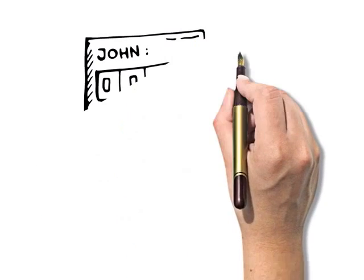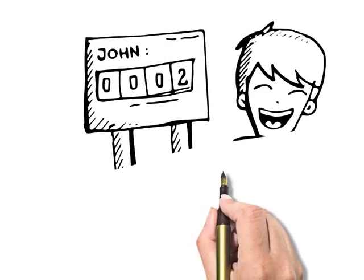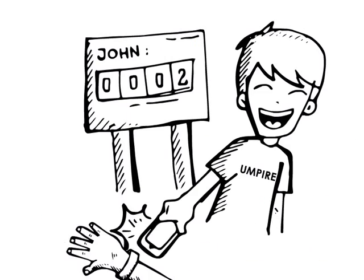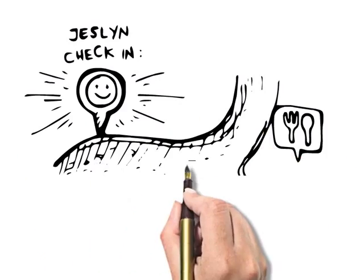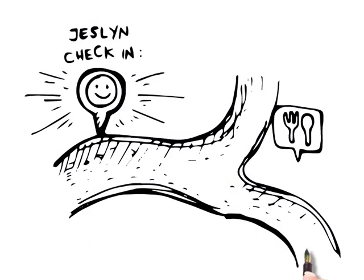In the race, the user has to flash the NFC wristband to the umpire to authenticate and get points credited. With geolocation, you can see the last stations or locations where the user checked in.